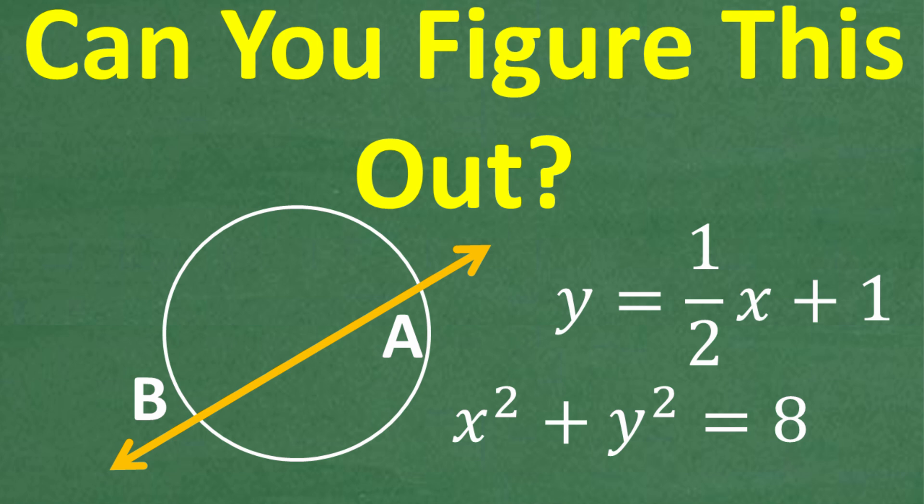Okay, so what do we got going on here? Well, obviously we have a circle and we have a line that's intersecting this circle.